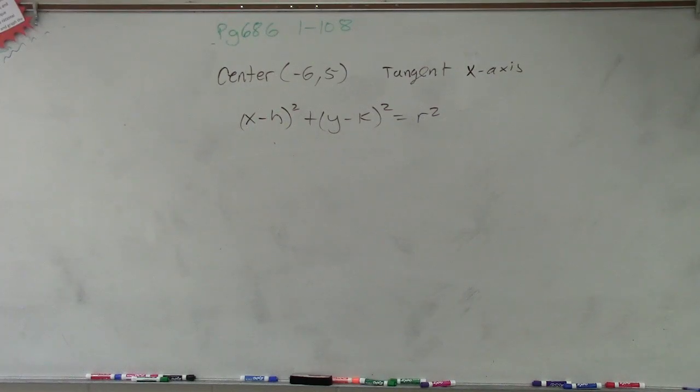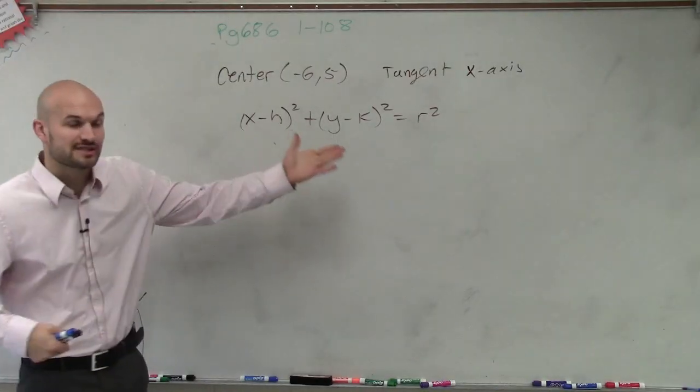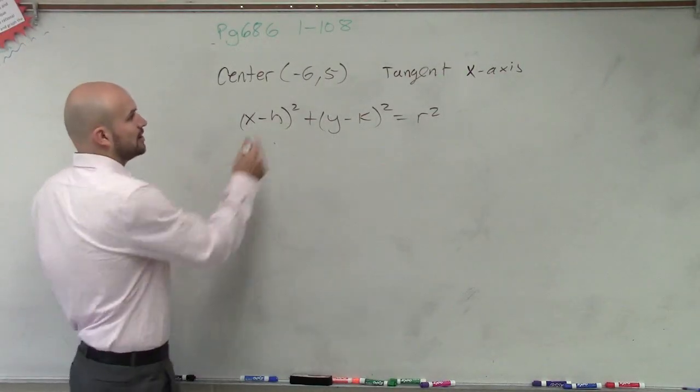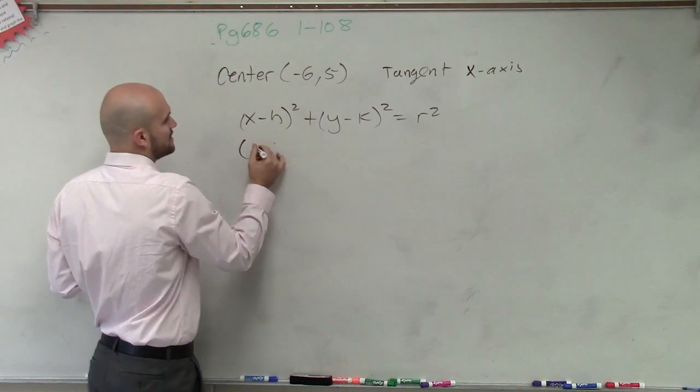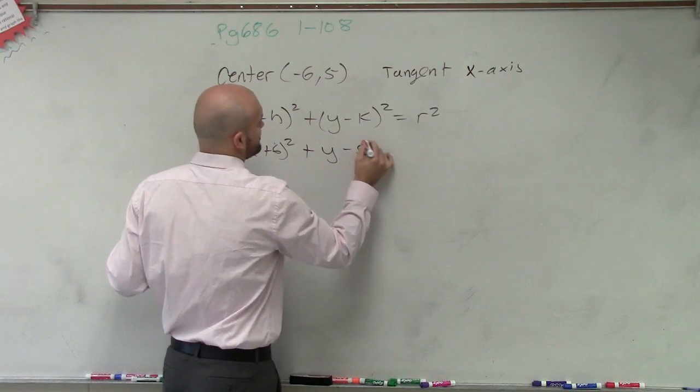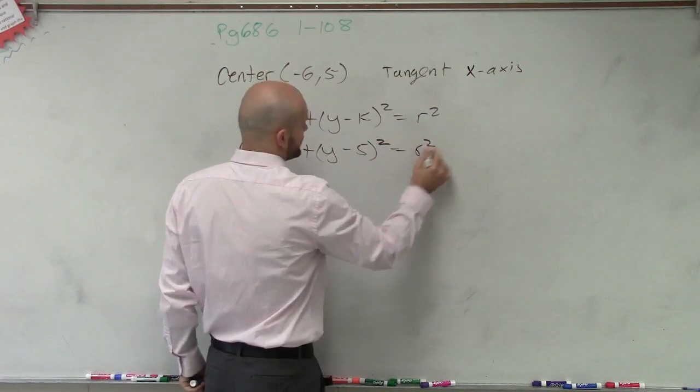When we have the center (-6, 5) tangent to the x-axis, we know the standard form of a circle. So we know that our center is going to be (x + 6)² + (y - 5)² = r².